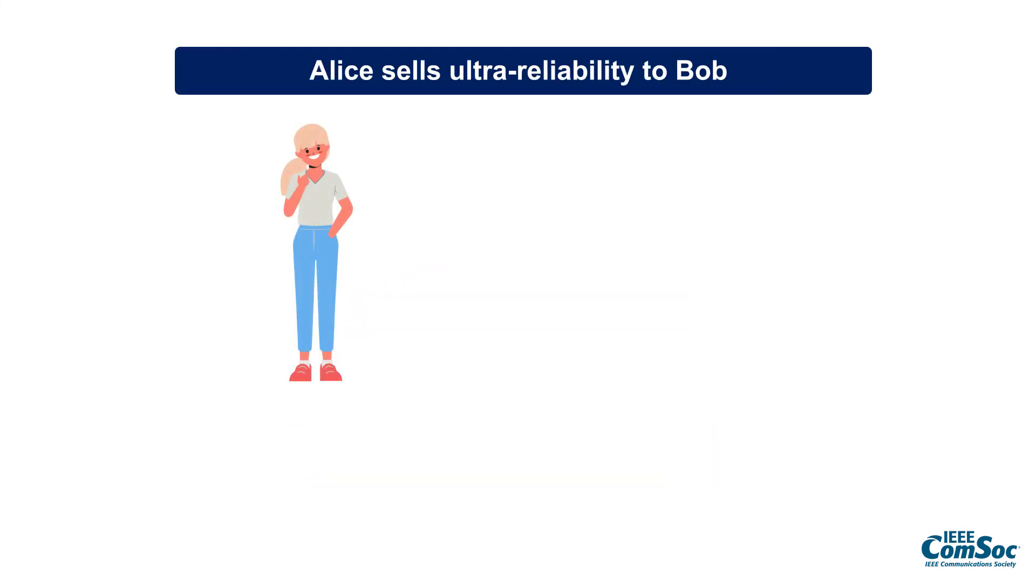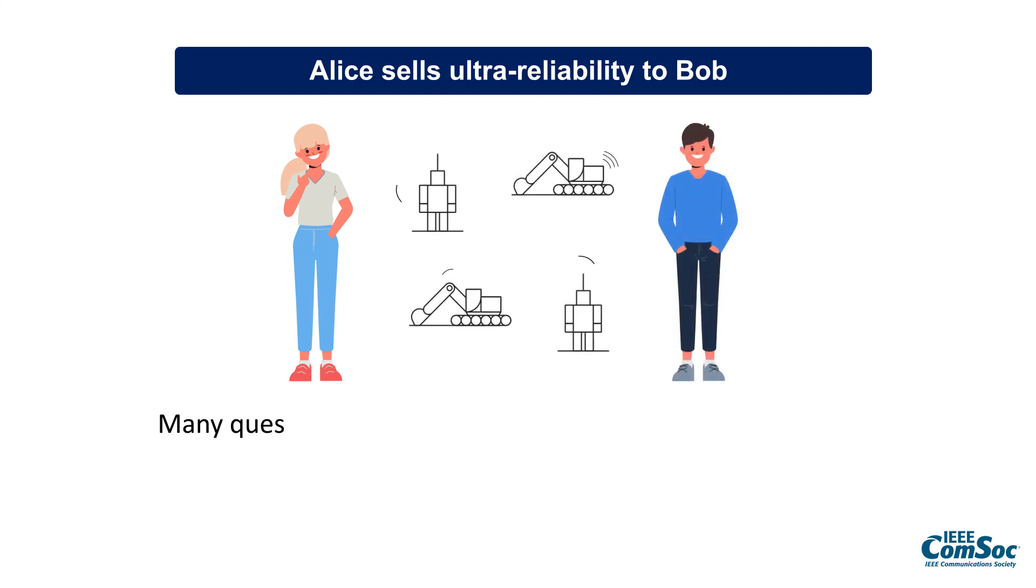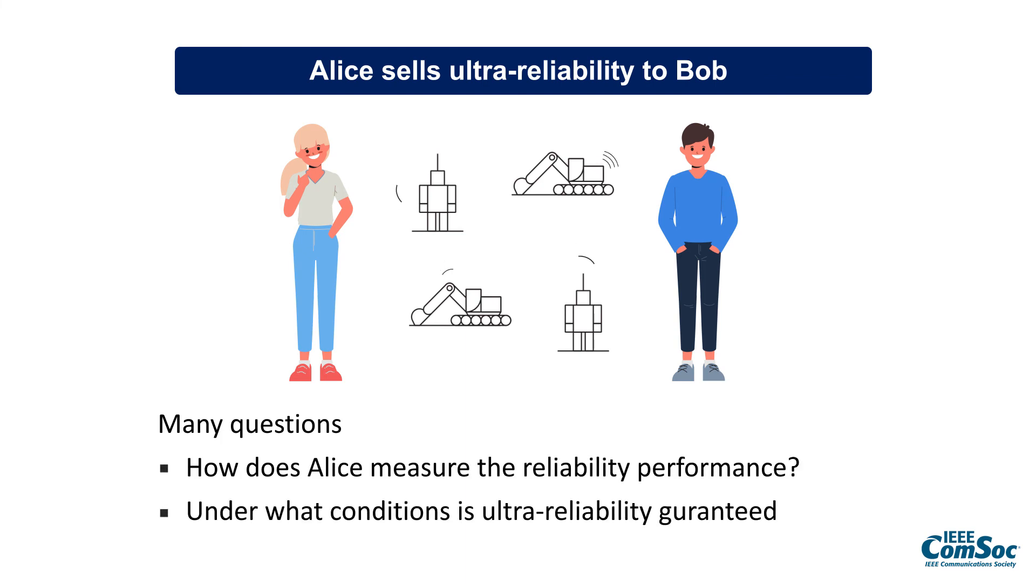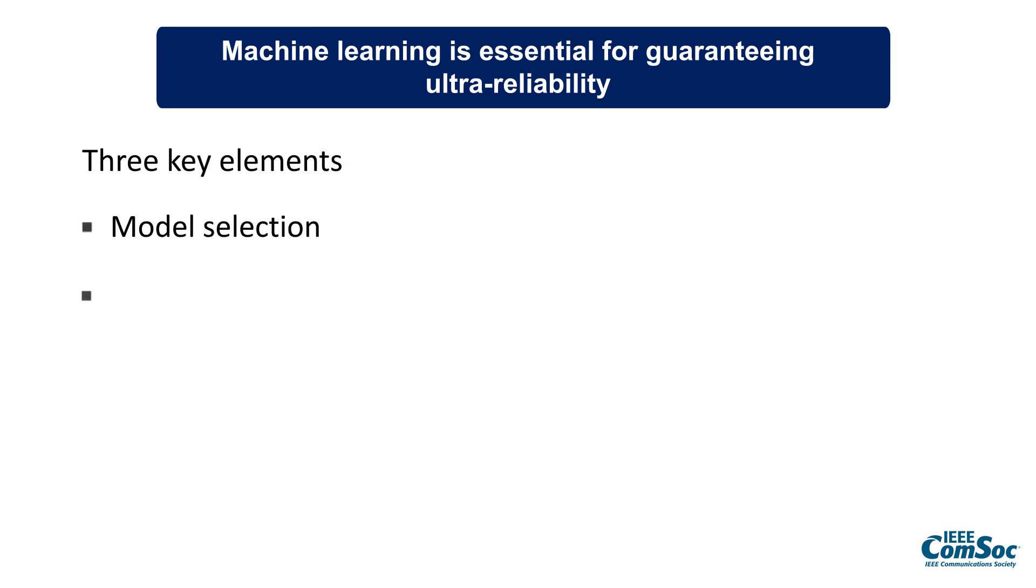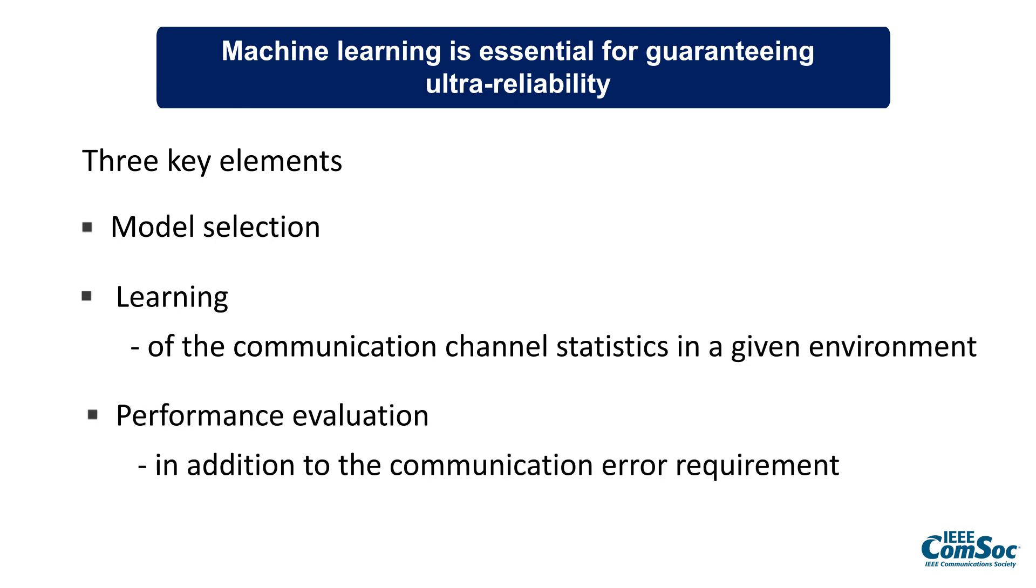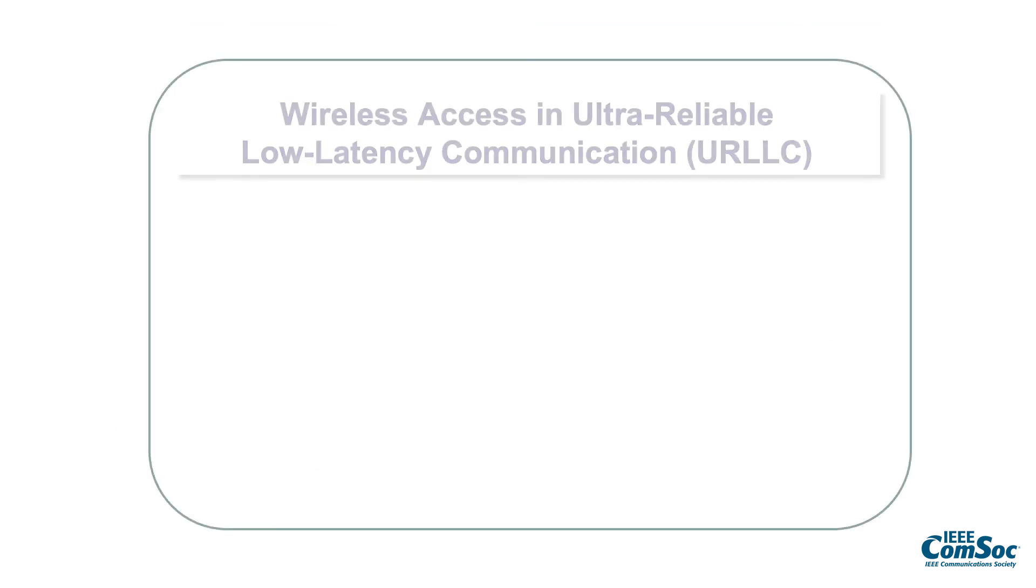Finally, we present the fundamental question of assessing ultra-reliability when Alice wants to sell ultra-reliability to Bob, asking how to measure the reliability performance and how to guarantee it. Therefore, machine learning is an essential tool for guaranteeing ultra-reliability. It contains three elements: model selection, learning and training in a given communication environment, and performance evaluation that is capable of communicating the uncertainty of the training process.